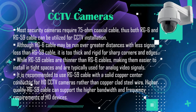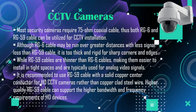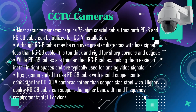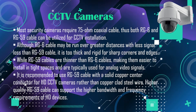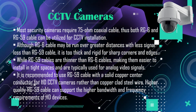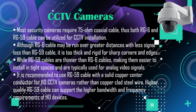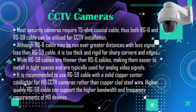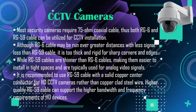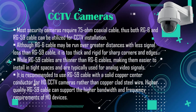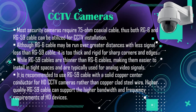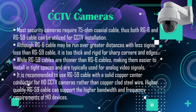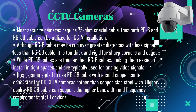CCTV cameras: most security cameras require 75 ohm coaxial cable, thus both RG6 and RG59 cable can be utilized for CCTV installation. Although RG6 cable may be run over greater distances with less signal loss than RG59 cable, it is too thick and rigid for sharp corners and edges.